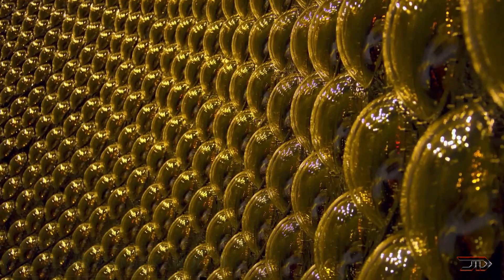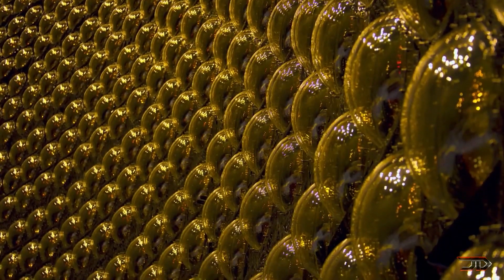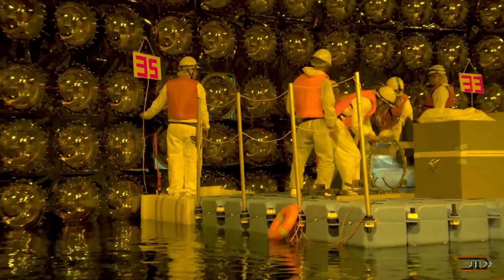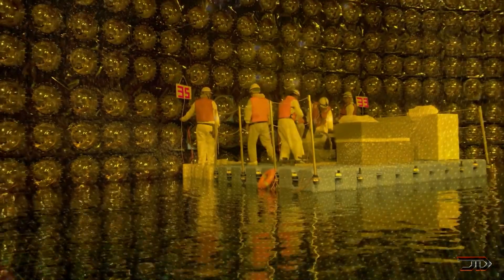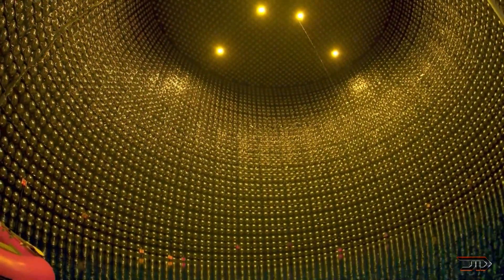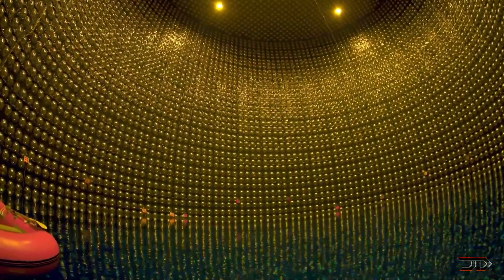It is located 3,000 feet below the surface in Haida, Kamiokou, Japan, and this is to prevent outside interference including cosmic radiation. It contains a very large tank, roughly 130 feet high, which can hold over 50,000 tons of water.